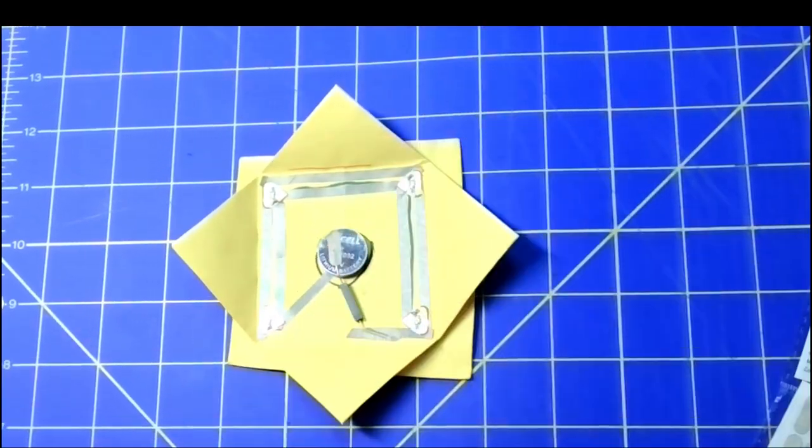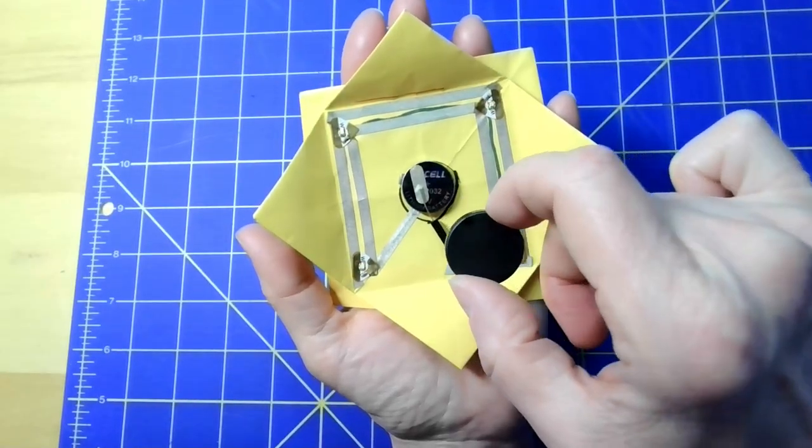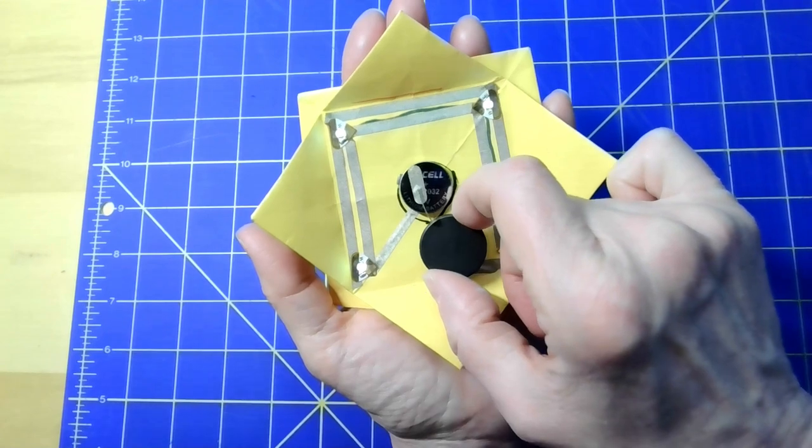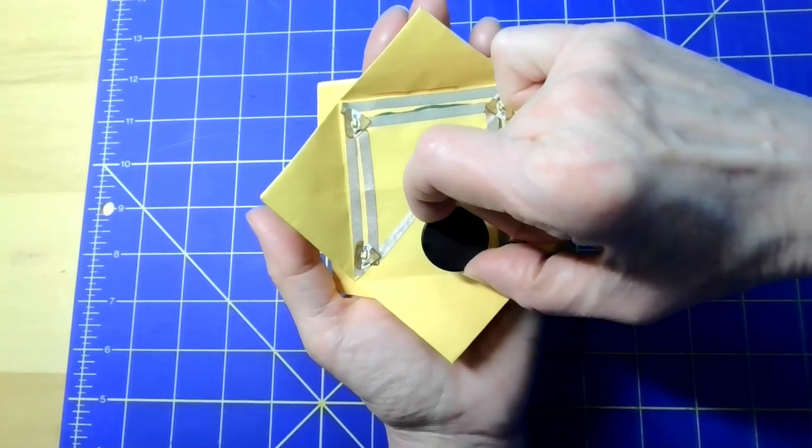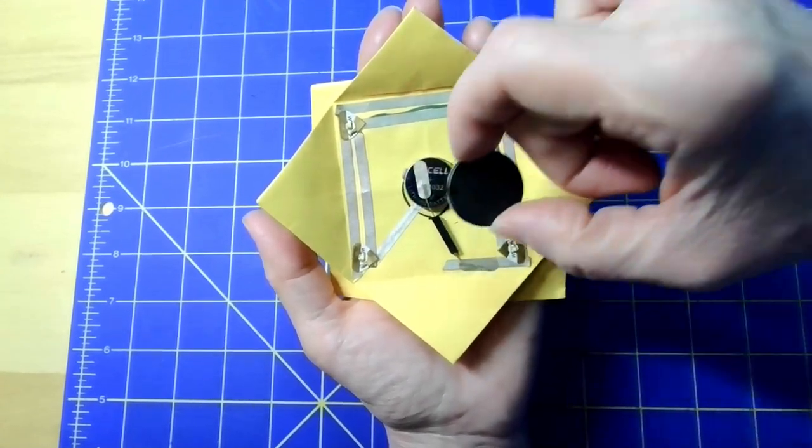And check the reed switch by moving the magnet over it. The LED should flash on and off. Test to see if rotating your magnet changes its effect on the reed switch.